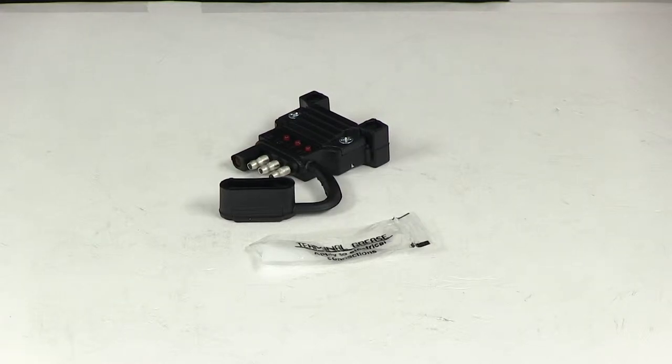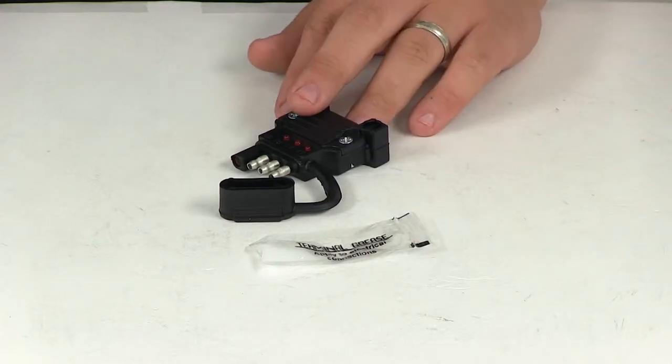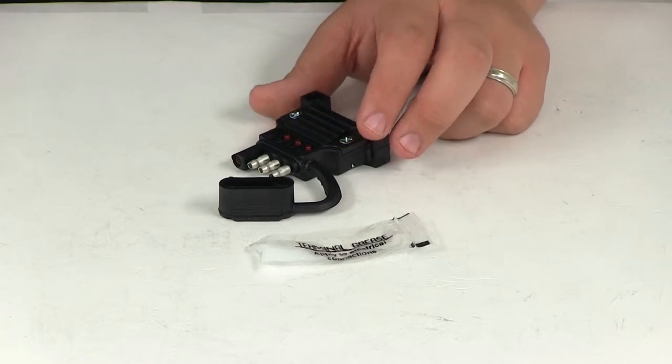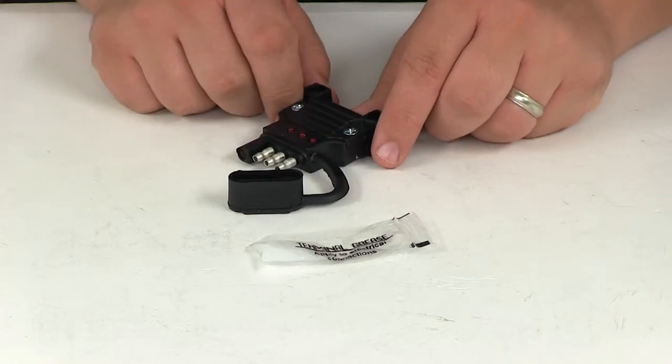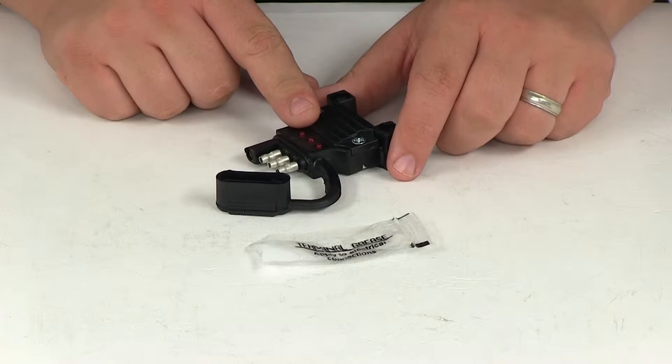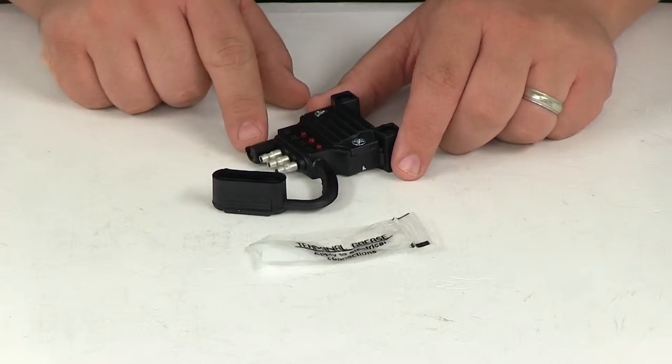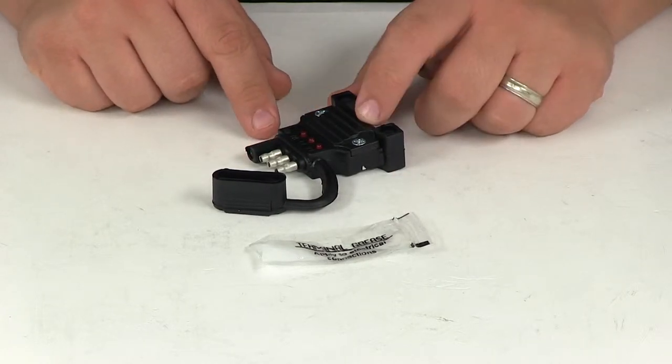Today we'll be reviewing part number HM48192. This is the Hopkins Endurance Quick Fix Replacement 4-Way Flat Trailer Connector with LED test lights. The plug is designed to replace a damaged 4-Way Flat Trailer End Connector in just a few quick easy steps.